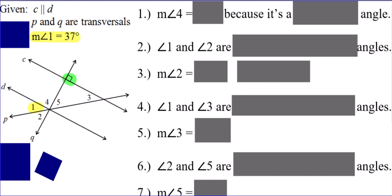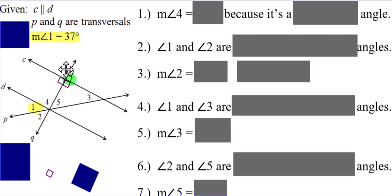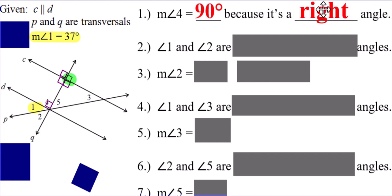Did you already do numbers one through seven? If you didn't, you've got to try them on your own — hit pause and try them on your own. Here we go: the measure of angle four is what? Little right angles trick here — if this guy is 90 degrees, then this guy is 90 degrees, and this guy is 90 degrees, and this guy is 90 degrees. And because of corresponding angles, if this angle is 90 degrees — top left-hand corner — then angle four is also 90 degrees. It's a right angle.